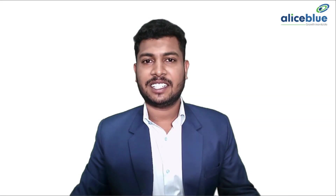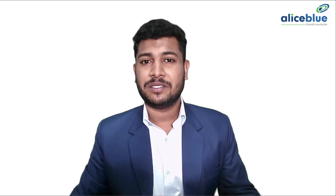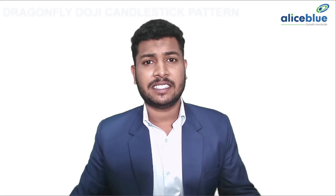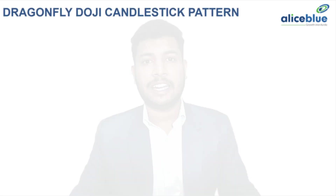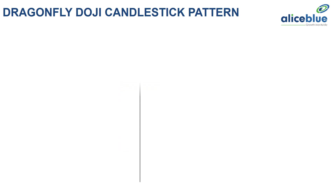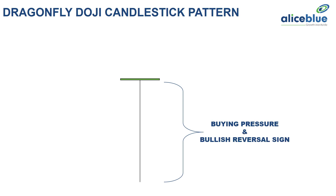Dragonfly Doji candlestick patterns are a type of candlestick pattern which is a bullish reversal sign confirmation pattern, and it signifies that the sellers are losing their strength and the buyers are gaining strength. The Dragonfly Doji candlestick pattern looks like there is a long lower wick, and the open and close are at the same level, which indicates more buying pressure from the lower level.